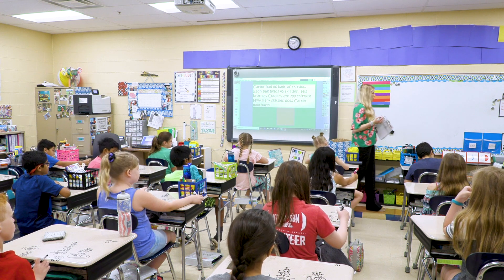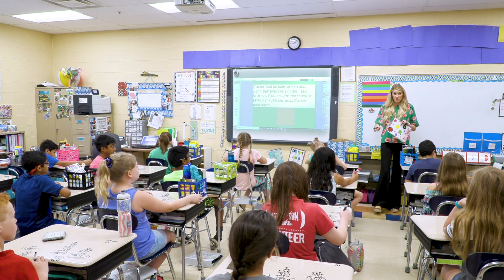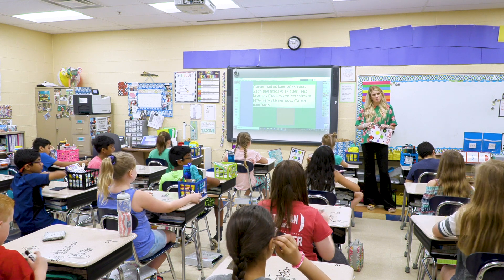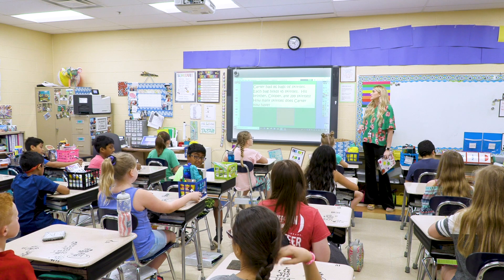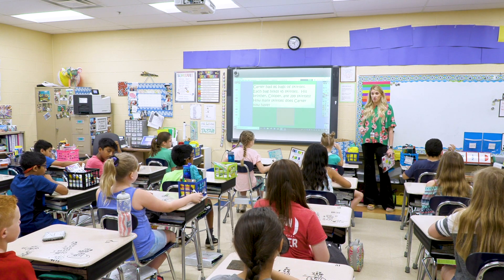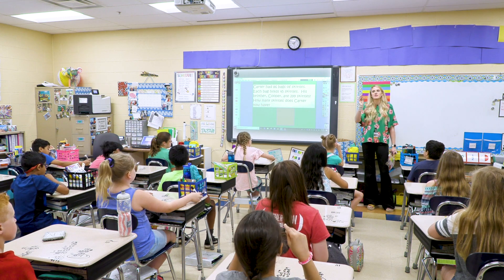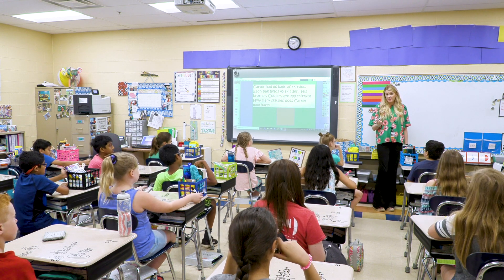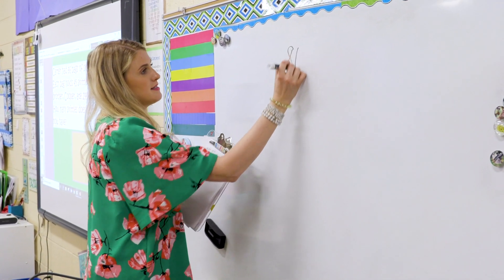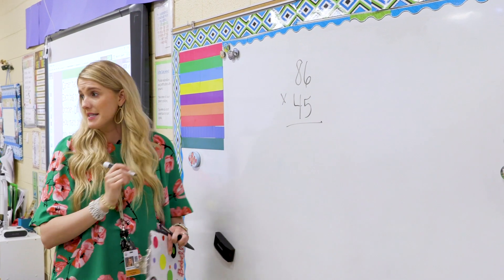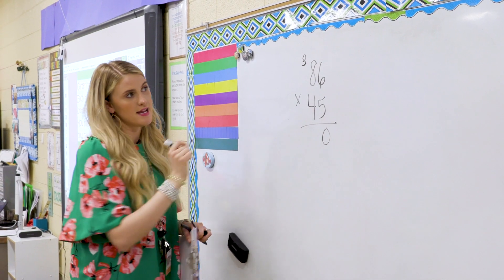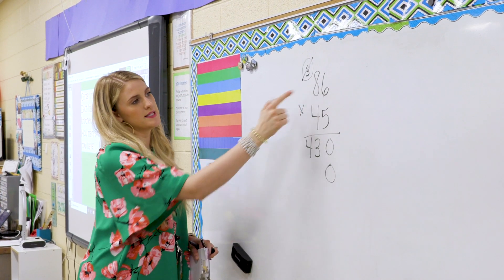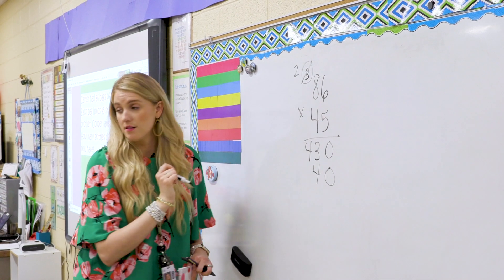Everybody makes mistakes — let's walk through it. We all know we have to multiply. What's the clue in our word problem that tells us we need to multiply? It says Carter had 86 bags of Skittles; each bag holds 45 Skittles. Can you picture that? 86 bags, each with 45. So 86 times 45: five times six is 30, five times eight plus three is 43. Placeholder — four times six is 24, four times eight is 32, carry to get 34.